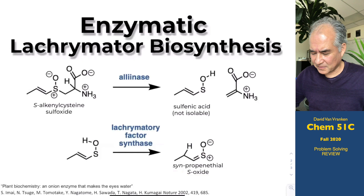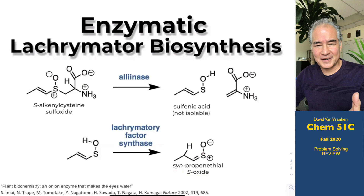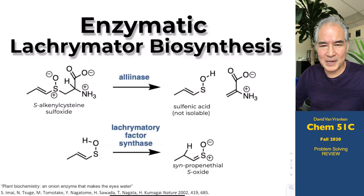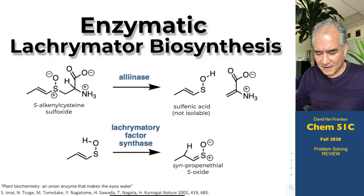Where does this compound come from? If you take an onion in the grocery store before you cut into it, there's nothing special about it that would let you know you're about to start crying. There's a sequence of biochemical reactions that converts a compound inside onion cells into propene thial S-oxide, a powerful lacrimator. Two enzymes are responsible for that.